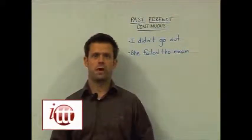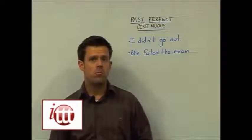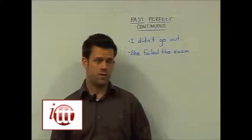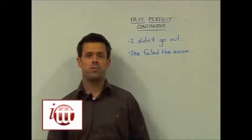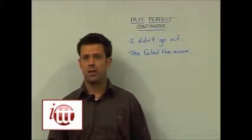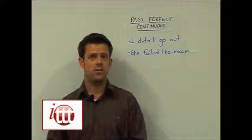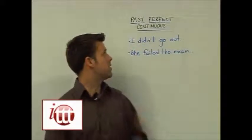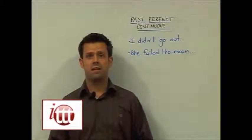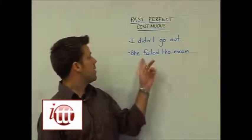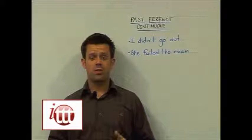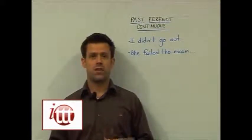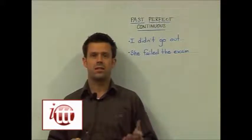Now some teaching ideas for the past perfect continuous tense. Very similar to the idea for the past perfect tense, we'll use an activity where students are given a prompt and encouraged to finish it sensibly using the past perfect continuous. If they read 'I didn't go out', perhaps they could say 'I didn't go out because I hadn't been feeling well', or 'She failed the exam because she hadn't been studying enough.' Students may use the past perfect tense, but we encourage use of the past perfect continuous.